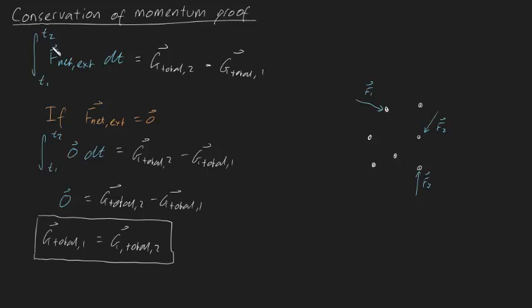T1 and T2 were arbitrary times, and we've shown that at any time T1, the total momentum is going to be equal to the total momentum at any other arbitrary time T2. So we've actually proven that momentum must remain the same always for a system if there's no net external forces acting on them.